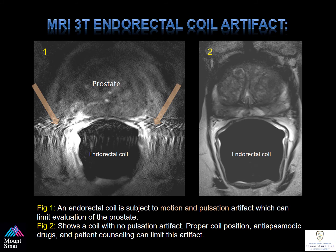These are some examples of motion or pulsations associated with the endorectal coil that can limit the prostate exam. Notice that on the right there are no pulsations, and this can be accomplished by proper or optimal coil position, administering antispasmodic agents, and counseling the patient on relaxation and understanding what's going on during the exam, which can improve the quality of the images obtained.